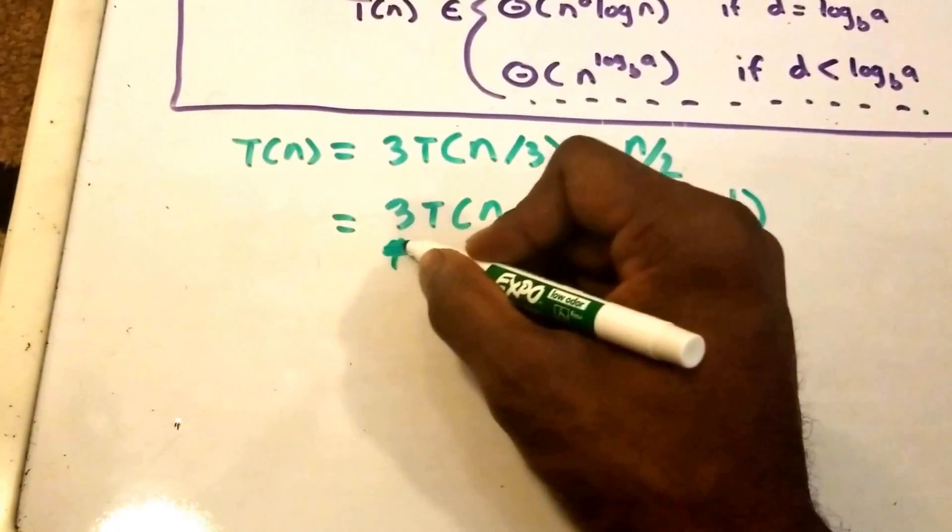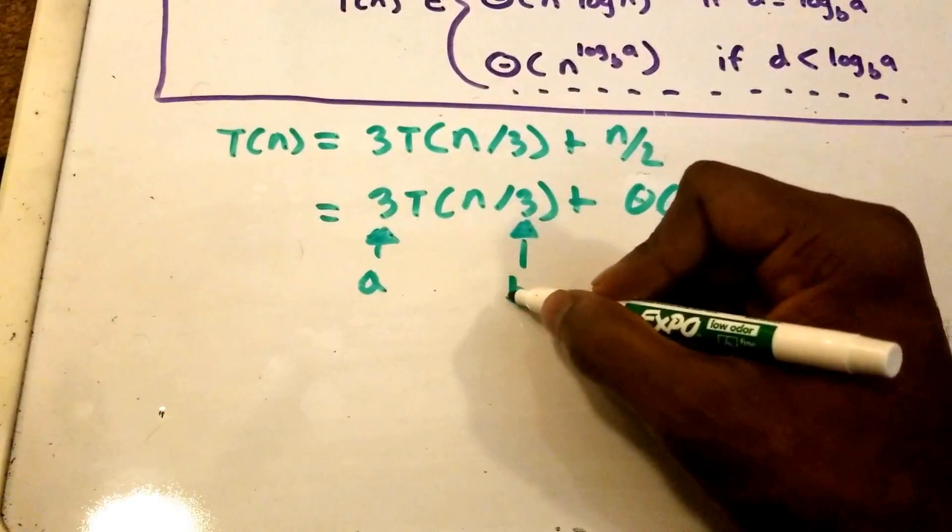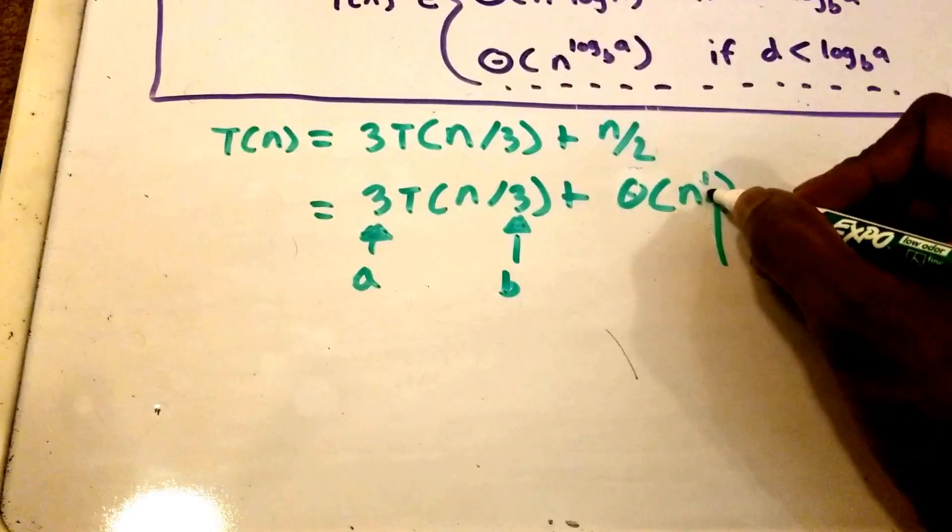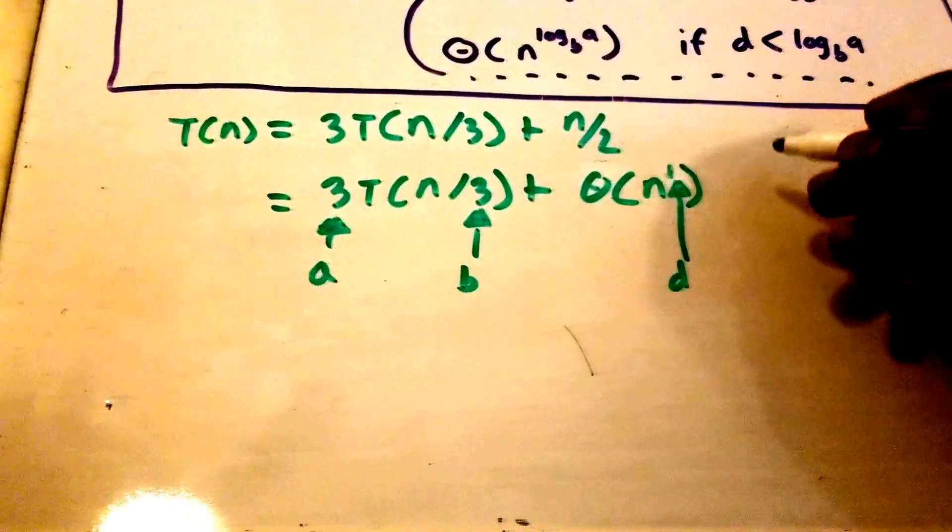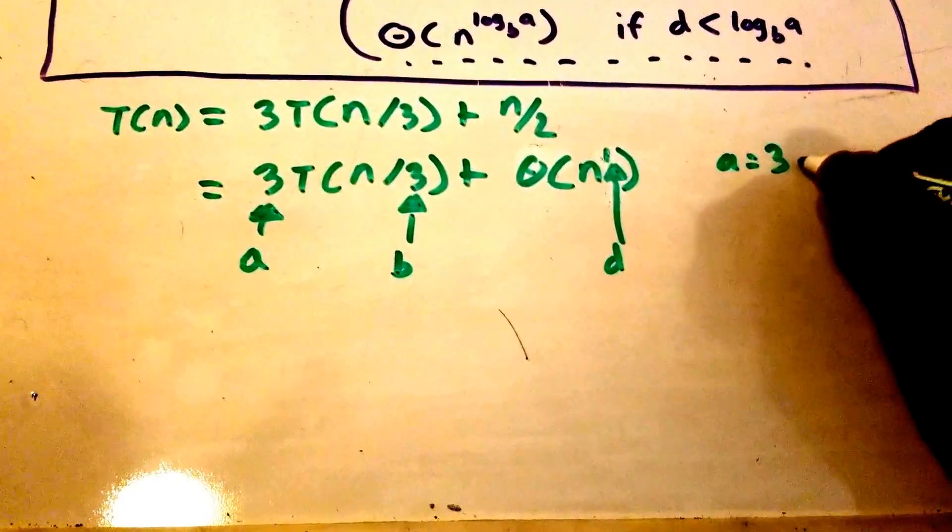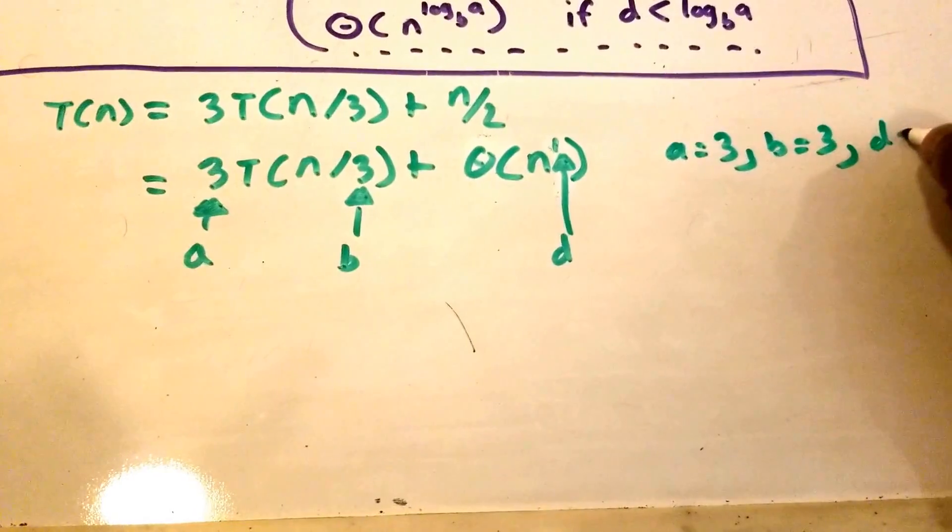So we have our a, which is here. We have our b, which is here. And we have our d value, which is right there. So our a equals 3, our b is equal to 3, and our d is equal to 1.